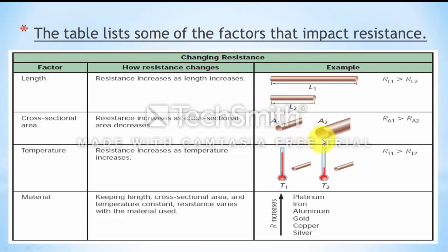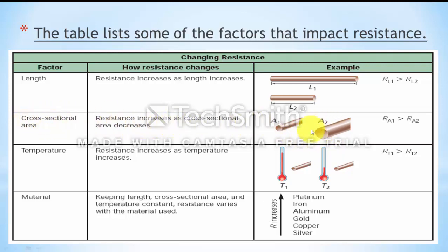The cross-sectional area A2 is more than A1. Like a wider water pipe allowing easier water flow, a larger cross-sectional area allows current to flow more easily. So resistance decreases with increasing cross-sectional area — resistance is inversely proportional to cross-sectional area.